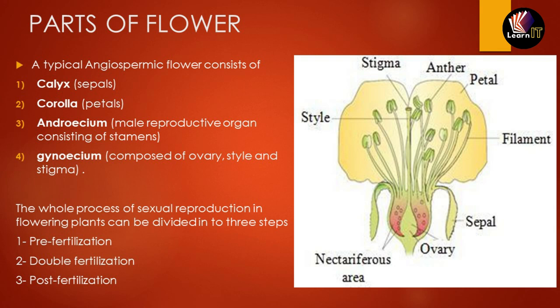You can see all these parts in the diagram. A china rose contains all the important accessory parts of an angiospermic flower — calyx, corolla, androecium, and gynoecium — all in one. In the next topic we will discuss how all these parts help a flower develop into seeds or a fruit.